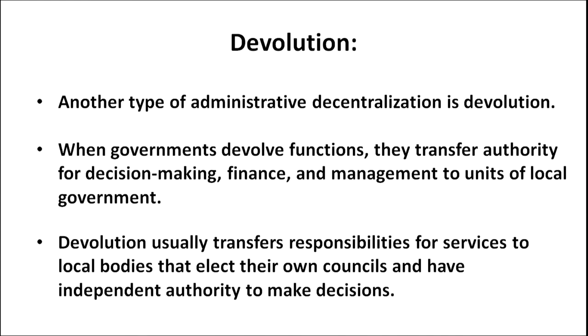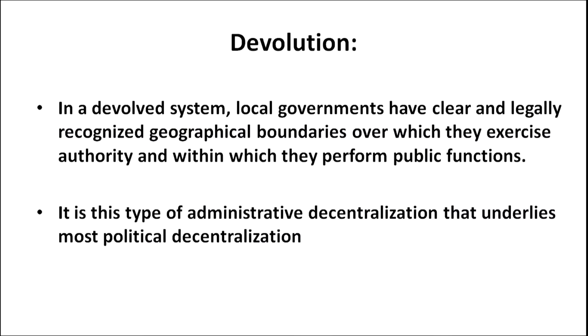When we talk about democratic decentralization, we also talk about devolution. Another type of administrative decentralization, devolution occurs when governments transfer authority for decision-making, finance, and management to units of local government. Devolution usually transfers responsibilities for services to local bodies that elect their own councils and have independent authority to make decisions. In a devolved system, local governments have clear and legally recognized geographical boundaries over which they exercise authority and perform public functions. It is this type — devolution — that underlies most political decentralization.